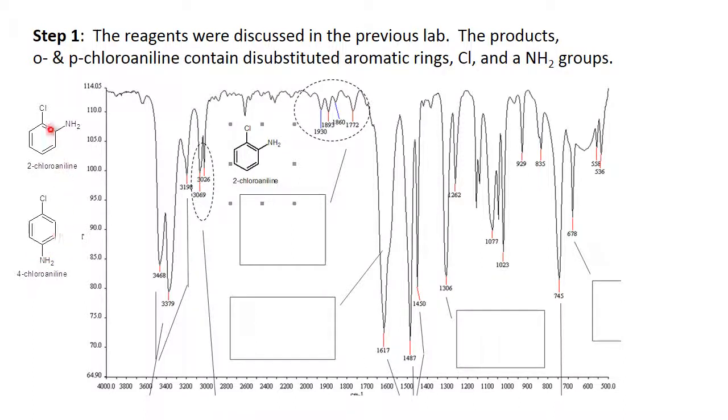Looking at these, we see we have di-substituted aromatic rings, one is ortho, one is para. We have a halogen chlorine and of course we have the amino group, and this is a primary amine in which the nitrogen is bonded to two hydrogens and one carbon.